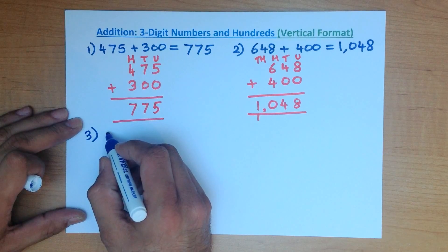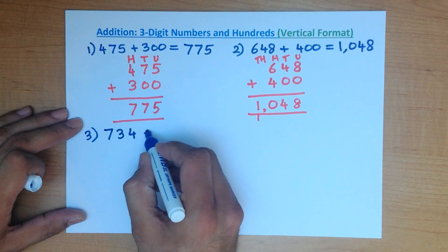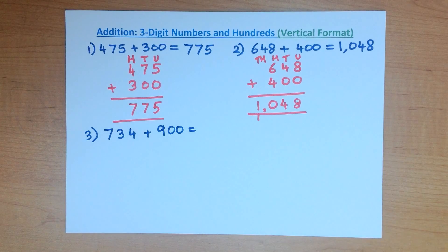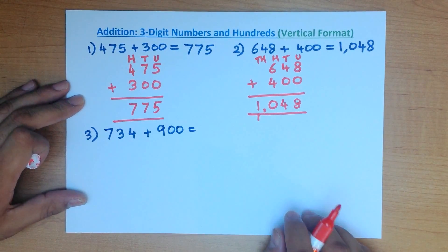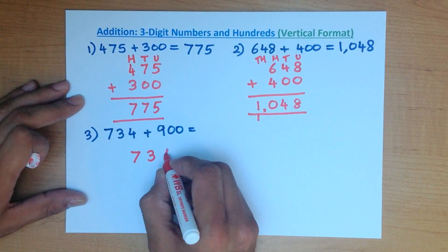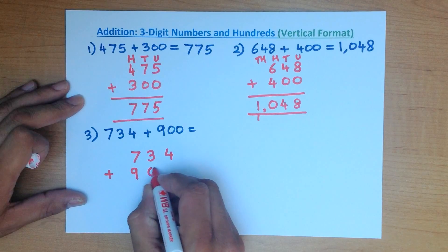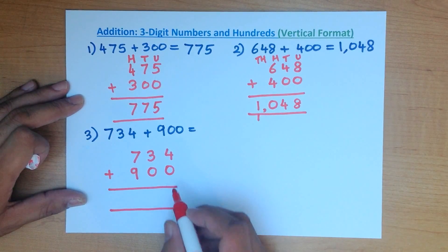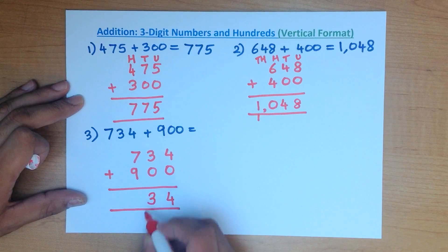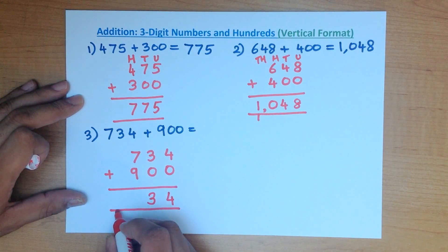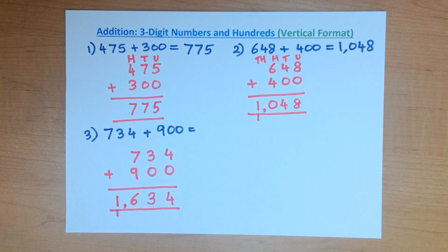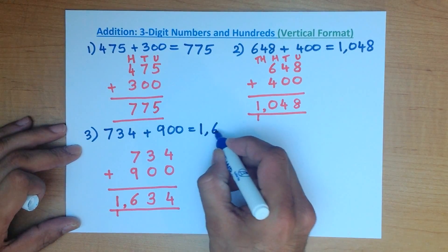Let's do one more. What is 734 plus 900? Now don't be afraid of the larger numbers — the same principles apply. 734 plus 900. We start with the right-hand side: 4 plus 0 is 4, 3 plus 0 is 3, and 7 plus 9 is 16 — so 1 here and 6 here. That 1 is part of the thousands column. So 734 plus 900 is 1634.